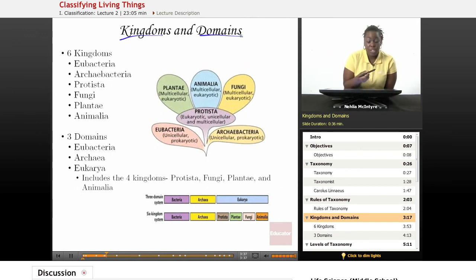Scientists can use either the kingdom system or the domain system, or they can use both to describe what an organism is or where it fits into the whole of all organisms put together.